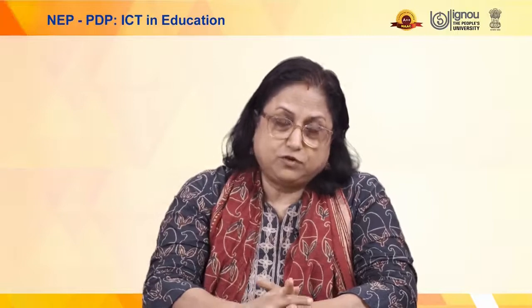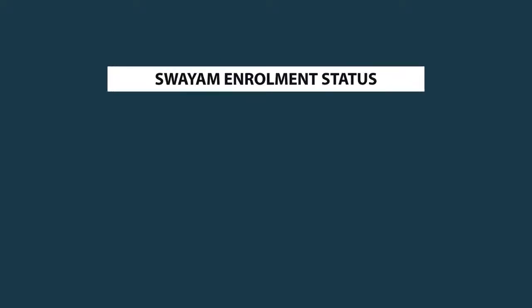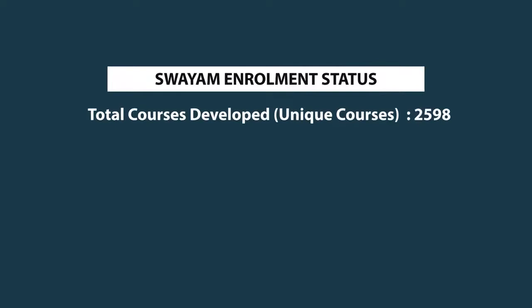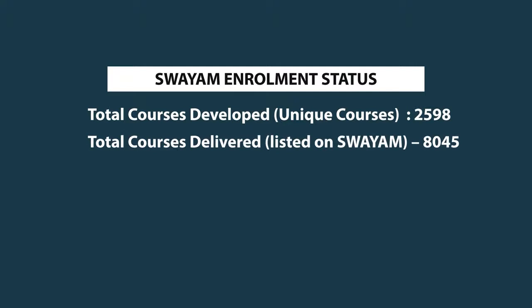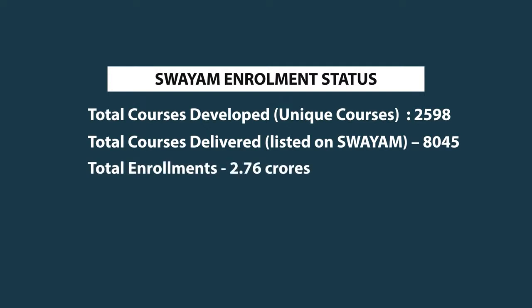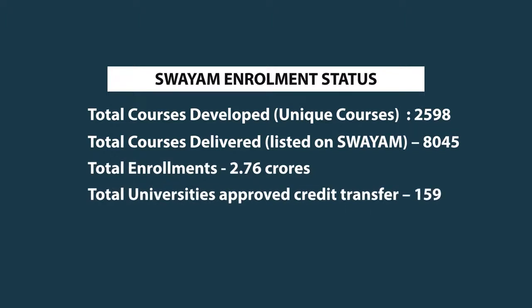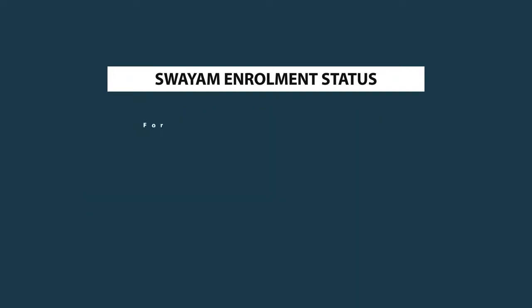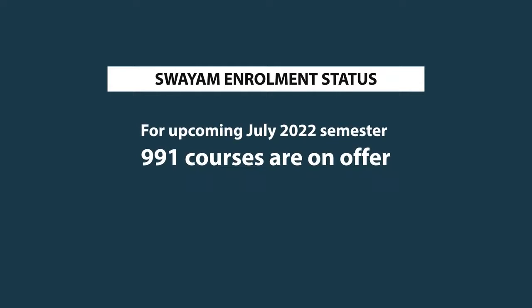Looking at the statistics: total unique courses developed are around 2,598; total courses listed on the SWAYAM platform is more than 8,000; total enrollment since the beginning is 2.76 crores; total universities approved for credit transfer is 159; total certificates issued till date is 11.66 lakhs. In the July session, more than 900 courses are being offered on the SWAYAM platform.